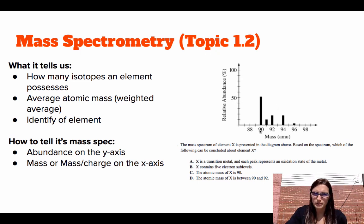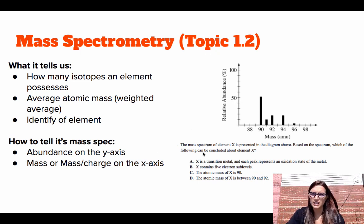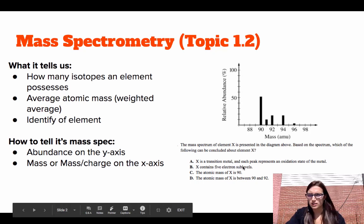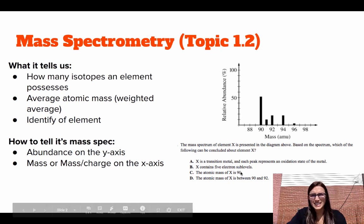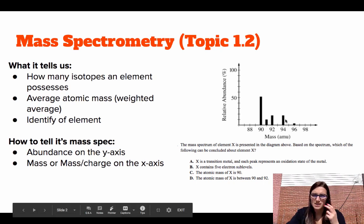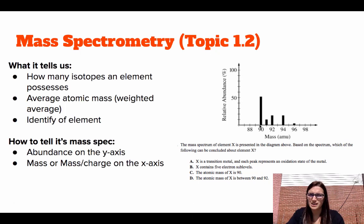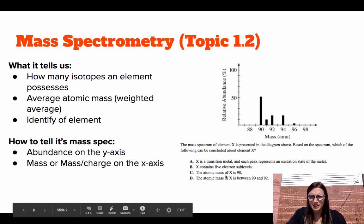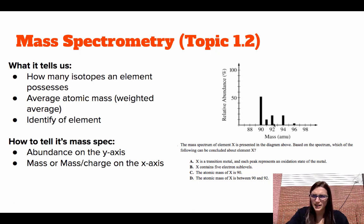The things we can conclude from a mass spectrum are: the number of isotopes, the identity of the element, or approximately the average atomic mass. Looking at the answer choices: the peaks do not represent oxidation states, and five electron sub-levels would be PES — photoelectron spectroscopy. 'The atomic mass is exactly 90' is not true; that would only be the case if there were 100% abundance at 90. The correct answer is that the atomic mass is somewhere between 90 and 92, because 50% is around 90 but there are also peaks at 91, 92, 94, and a tiny bit at 96.